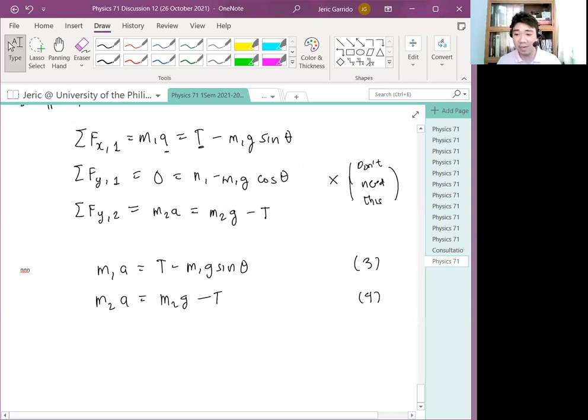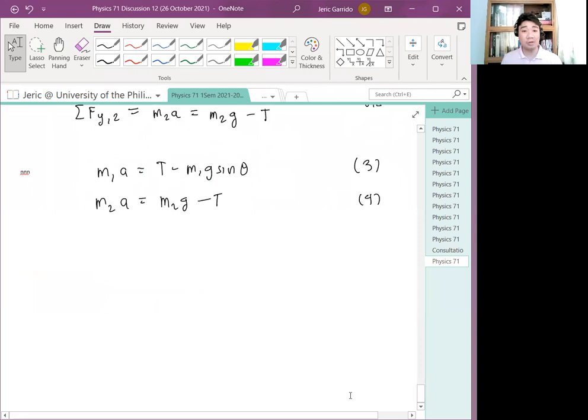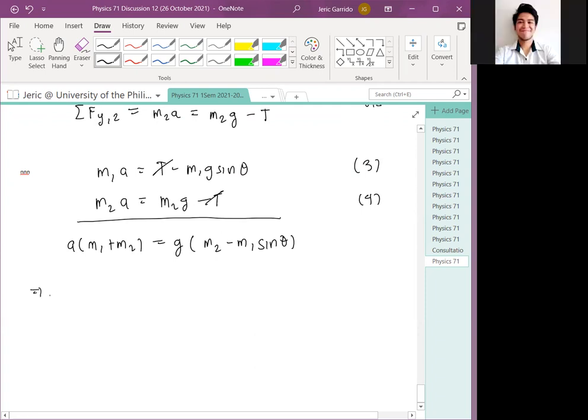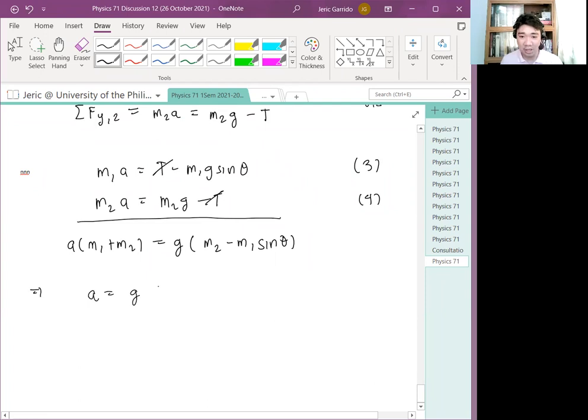What you need, therefore, are two equations. I have M1A equals T minus M1G sine theta. And I have M2A equals M2G minus T. This is equation 3. And this is equation 4. What I'll do after that is I want to solve for A. So if I solve for A, I will add these two equations. The tension cancels. And I have A, quantity M1 plus M2, equals G quantity M2 minus M1 sine theta. And therefore, the acceleration is simply G quantity M2 minus M1 sine theta, all over M1 plus M2. This is equation 5.